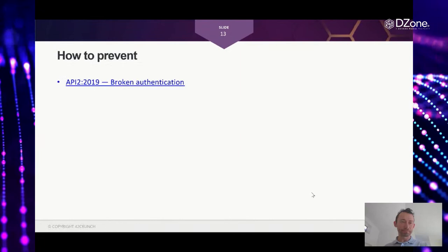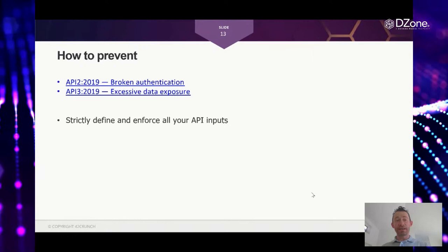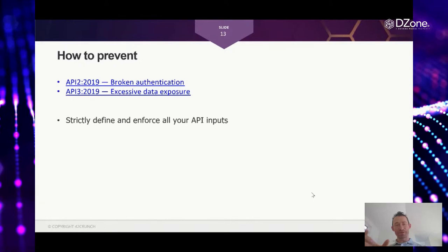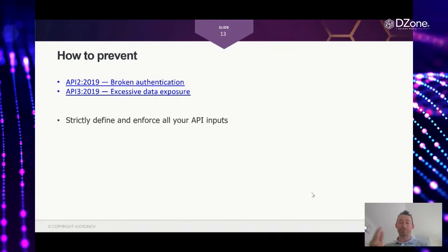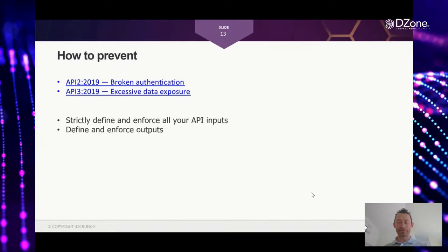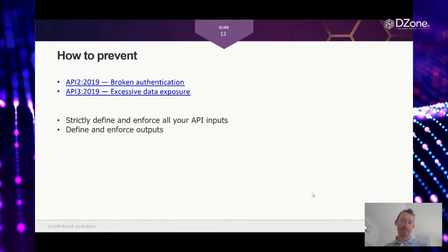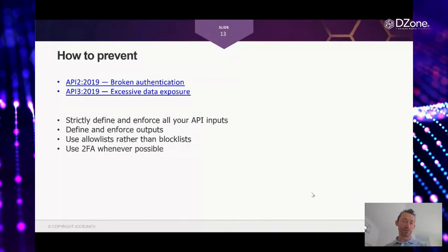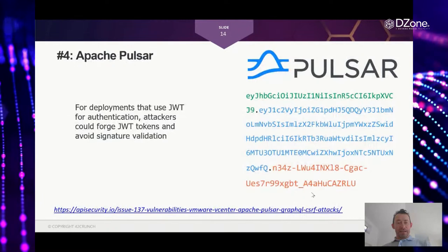This is broken authentication and excessive data exposure. To prevent it: strictly define and enforce all API inputs — for any string, define the exact regular expression of what is allowed; if it's alphanumeric only, define that with a length constraint like 1–20 alphanumeric characters. Define outputs as well so unexpected data leakage can be prevented. Block lists don't work well — use allow lists, permitting only what you expect and blocking everything else. Two-factor authentication on all accounts is also a good practice.